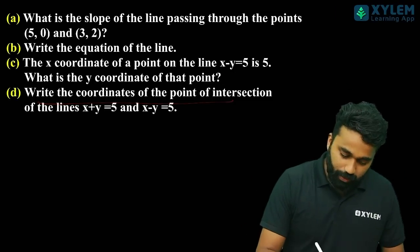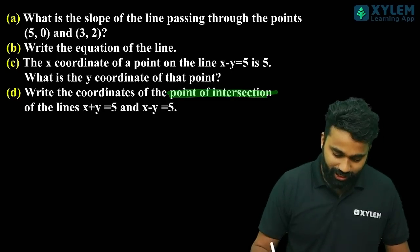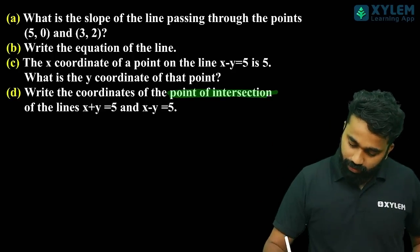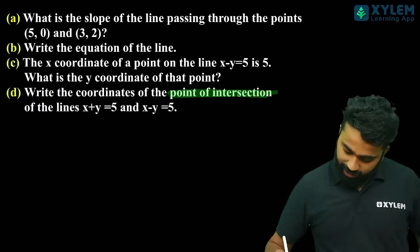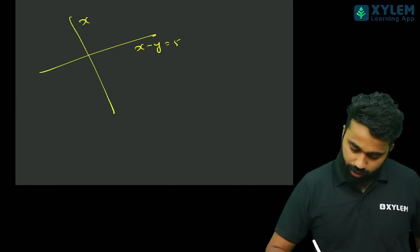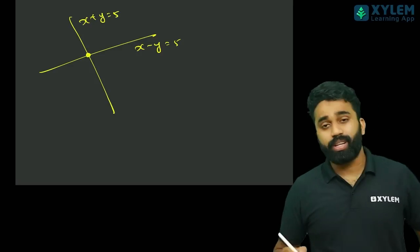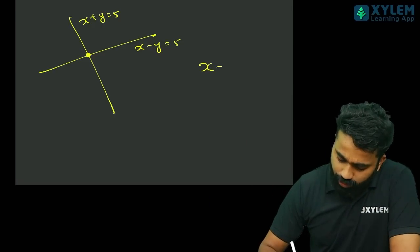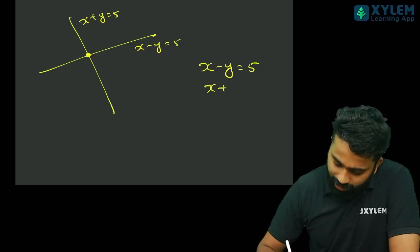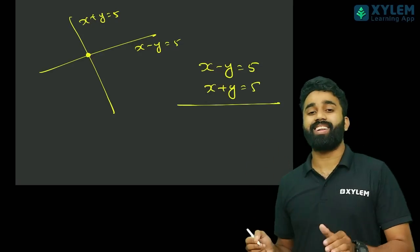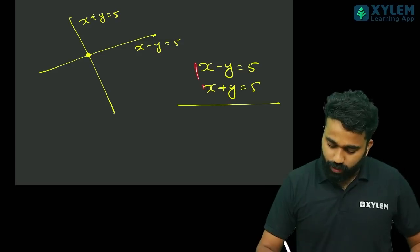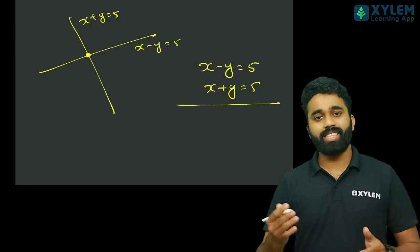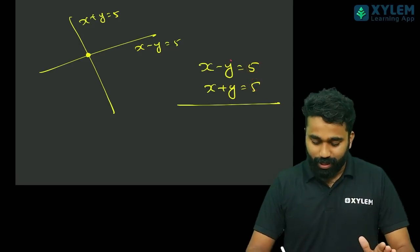The third step is the point of intersection. This is the point of intersection. For example, we have two points of intersection. We have two points of intersection. If you want to do this, you find the point of intersection.